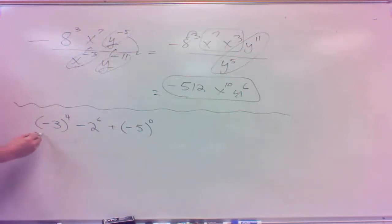And if I have negative 3 four times, that's going to be a positive, because those two make a positive, those two make a positive. It's 81, but it's a positive 81.